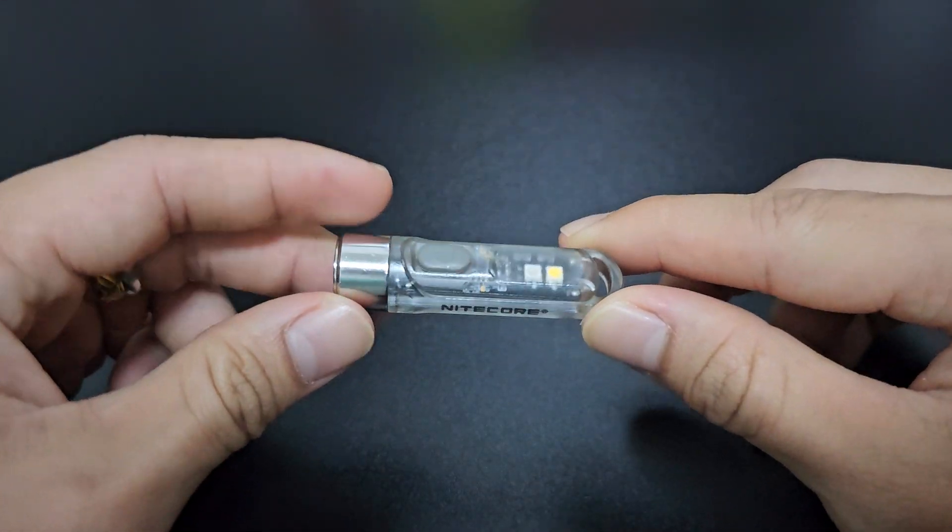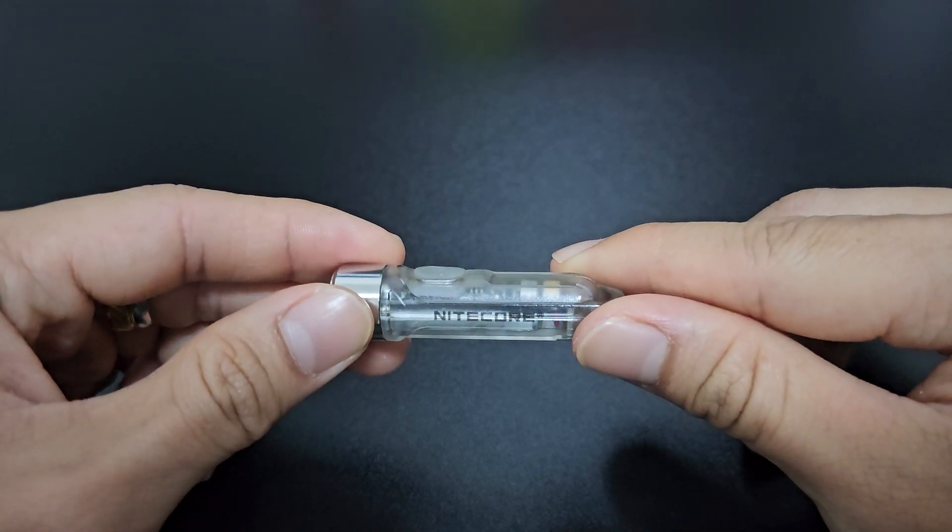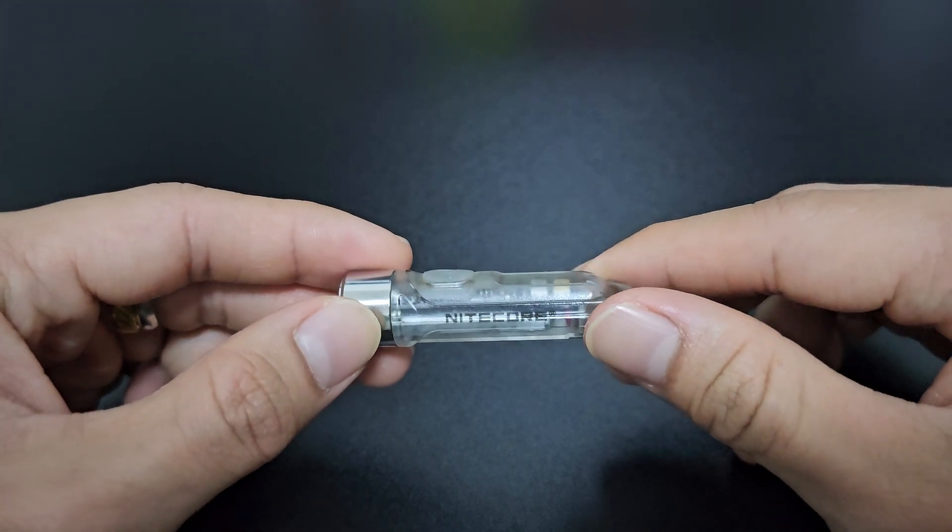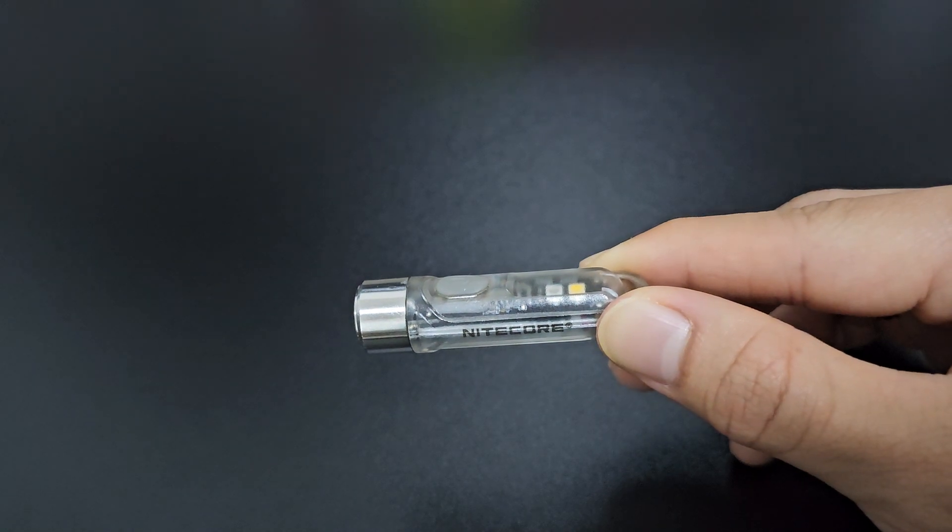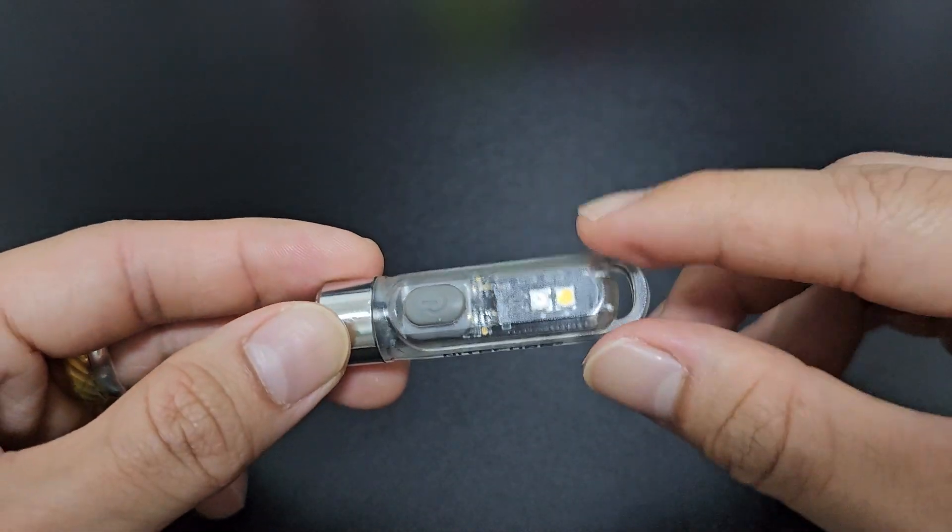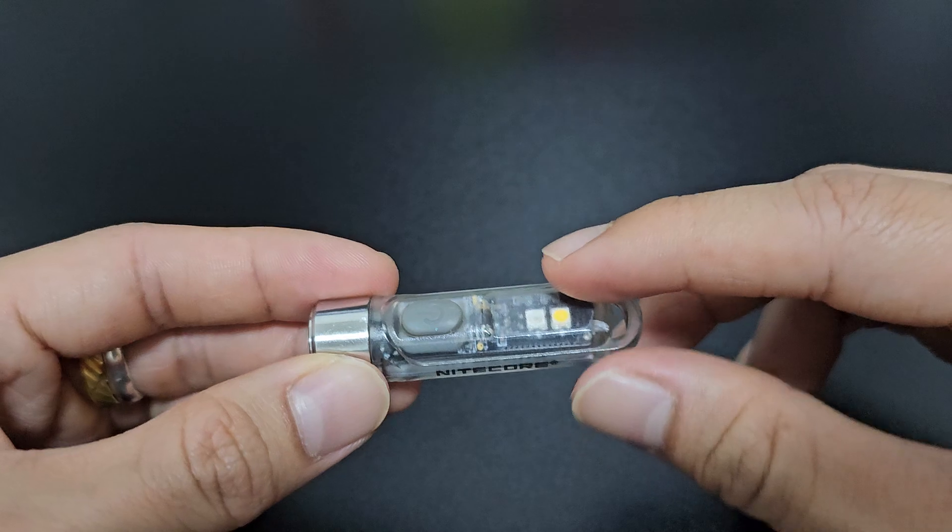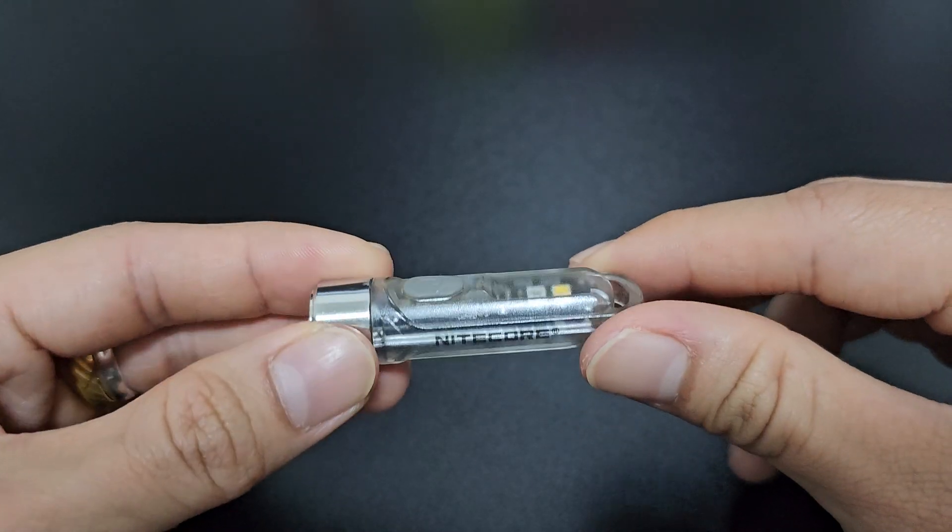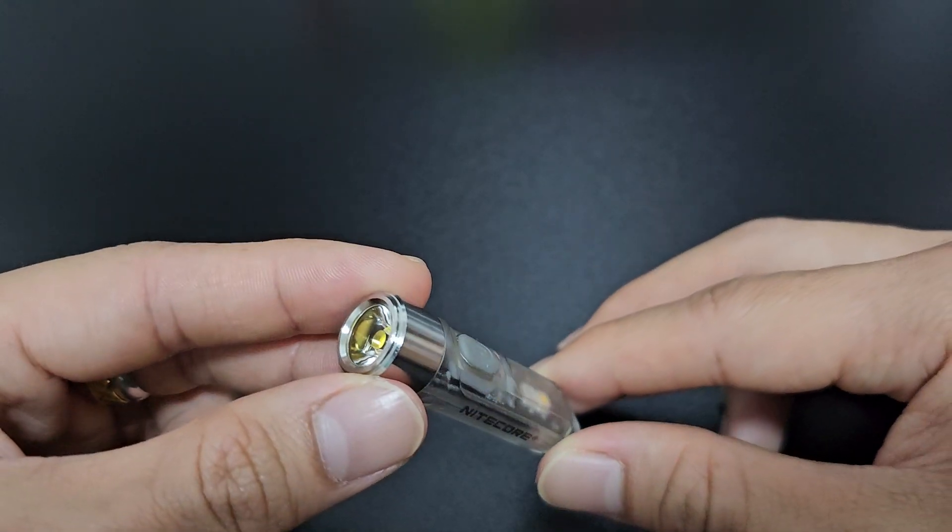We are going to review a pocket light from Nitecore. This is the Nitecore Tiki, a very interesting pocket light. The max output of this light is about 300 lumens, so very useful if you need that short burst of power.